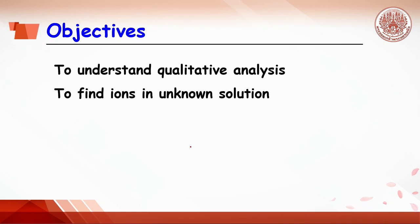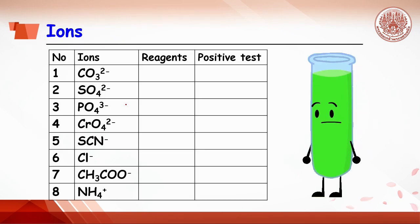The objectives for the experiment today are to understand qualitative analysis and to find ions in an unknown solution. Today, each unknown sample in the test tube contains three ions. You need to find out what ions are.